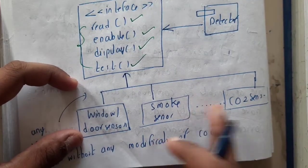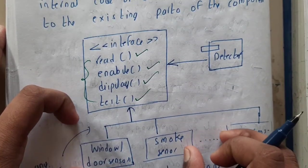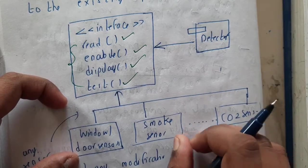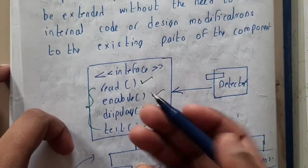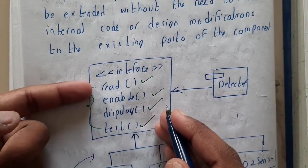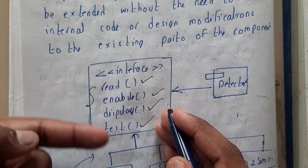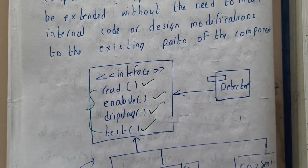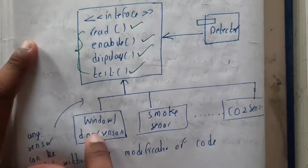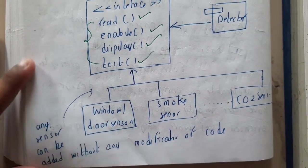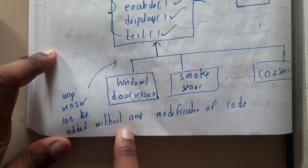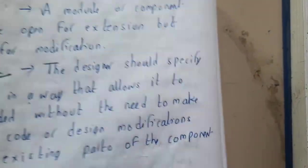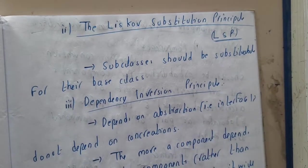In this IoT-based project, any IoT component will read some readings, enable something, display something, and test something. These are four common things of every component. That is the reason why you have endless options to add any component — any sensor can be added without any modification in the code. So our project is following the Open Closed Principle.